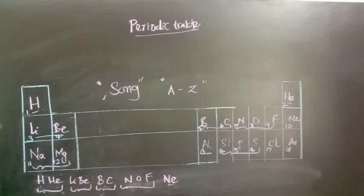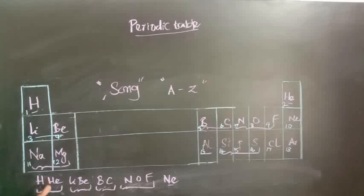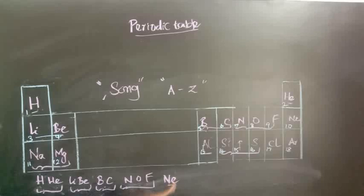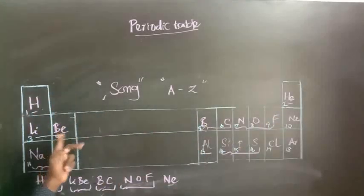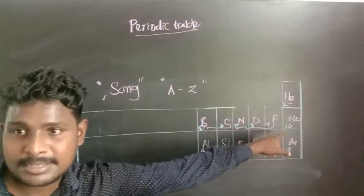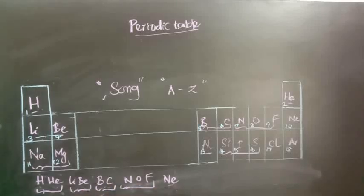Let's practice: HaHi, LiBhi, Buck, Naf, Ni. One more time — HaHi, LiBhi, Buck, Naf, Ni. Again — HaHi, LiBhi, Buck, Naf, Ni. I hope the first 10 elements are now clear for you with the rhythm.